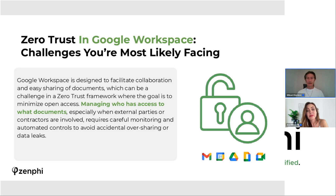The same goes for devices and data. A Zero Trust model doesn't really care if it's a user, a device, or data — we think about it the same way. If something wants access to your system, question it. Decide if you want to allow it or block it. And when a project starts, sit down and write down the main criteria for access — these are the things we actually need. Everything else should be left out and blocked.